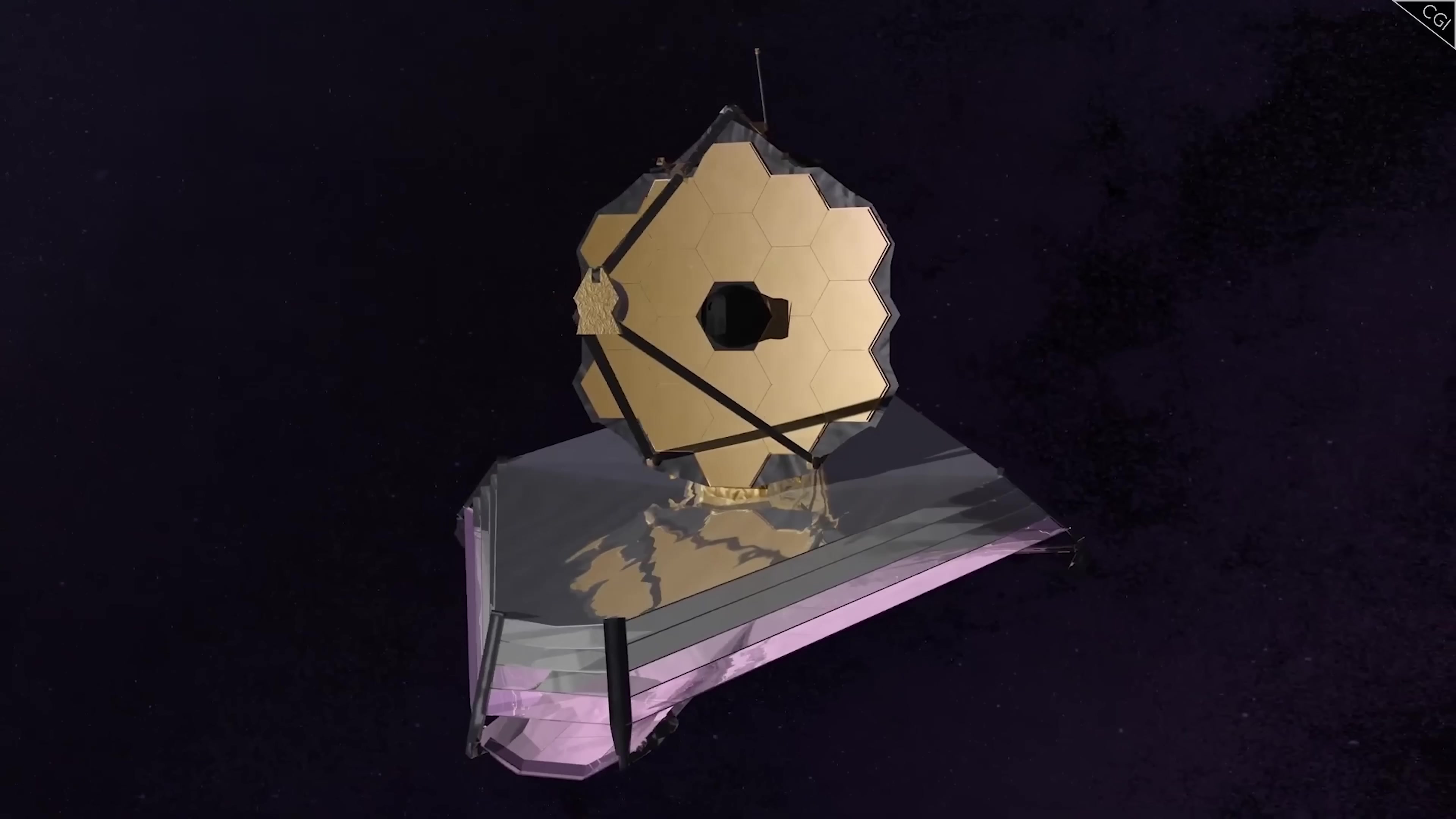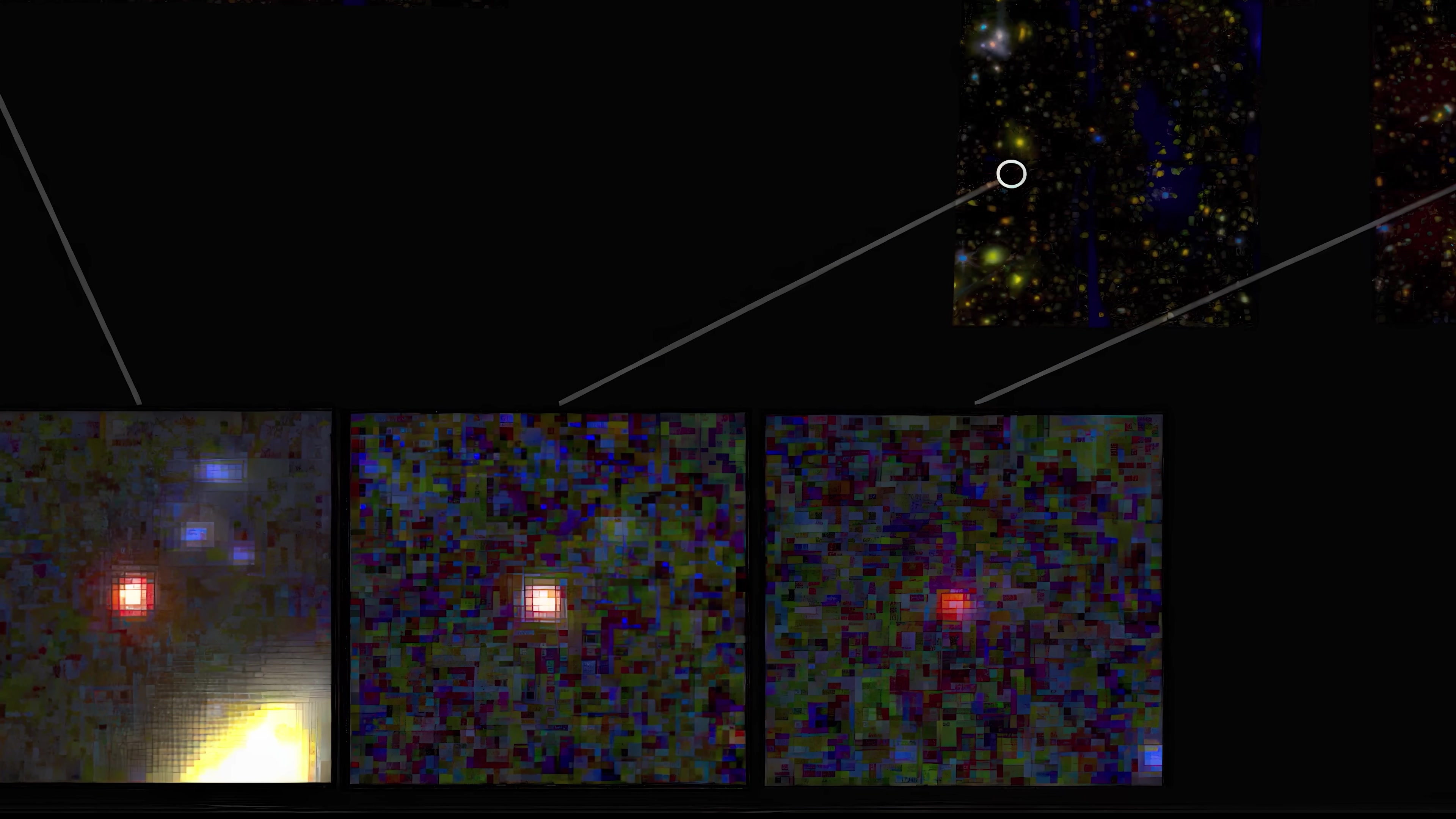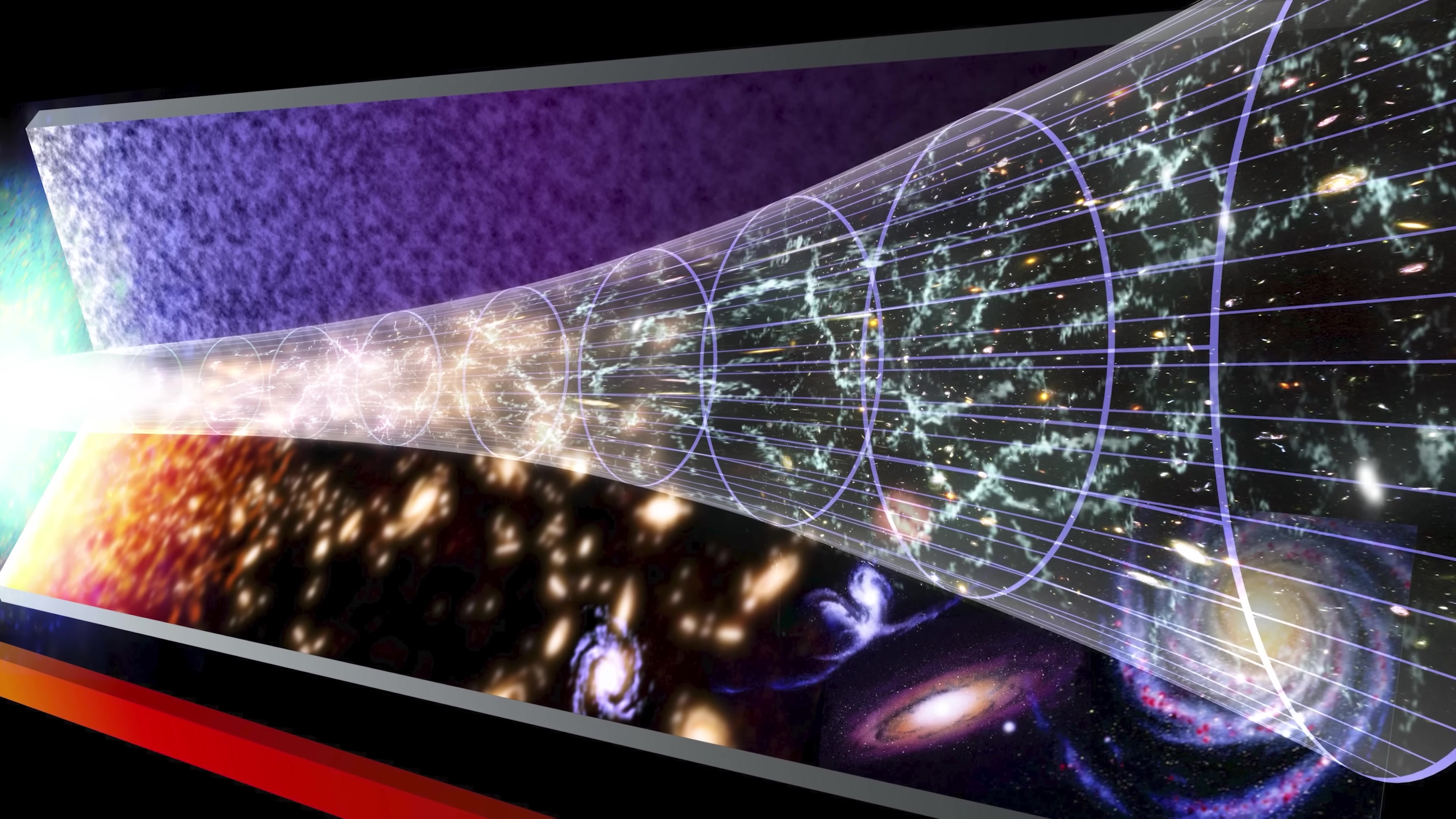When the James Webb Space Telescope finally saw the edges of the universe, we knew we had a problem. Webb was able to resolve light emitted from stars 13 billion years ago, helping us to peer back in time to some of the universe's earliest moments.